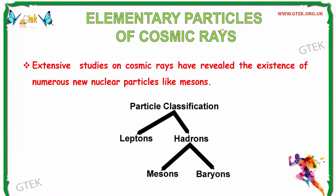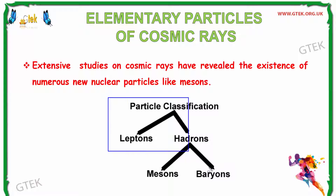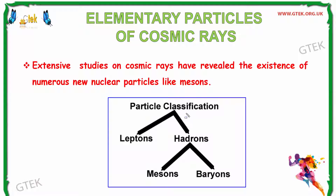Now let us see about the elementary particles of cosmic rays. Extensive studies on cosmic rays have revealed the existence of numerous nuclear particles like mesons. The particle classification has electrons and hadrons at first, and hadrons are further divided into mesons and baryons.